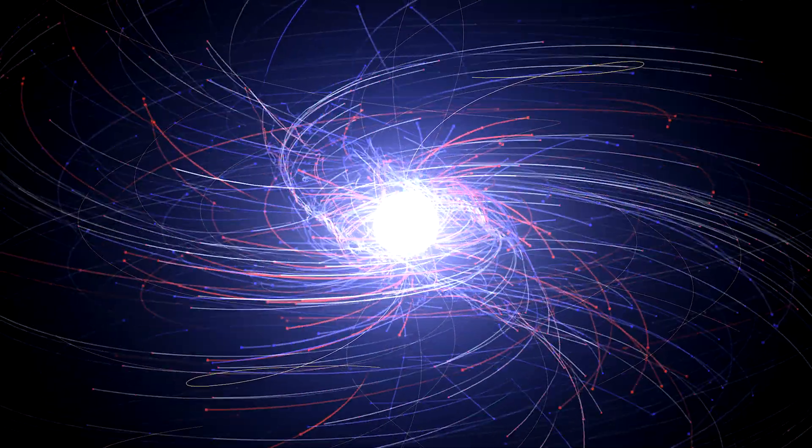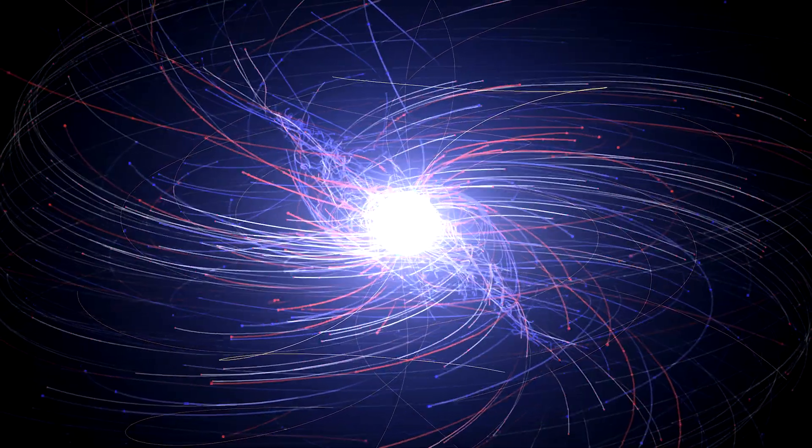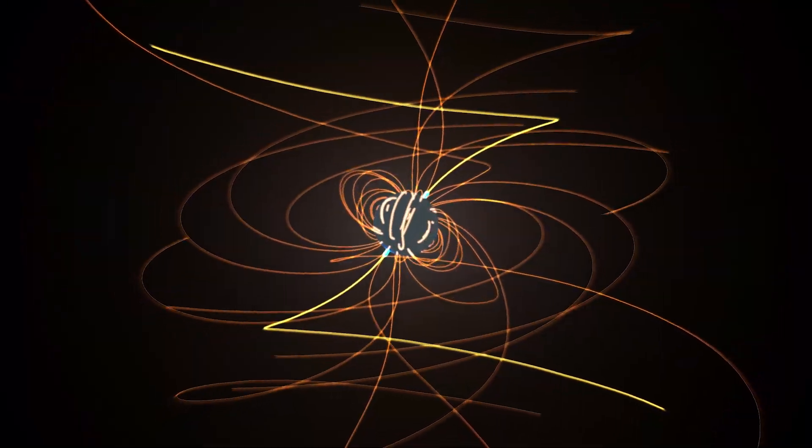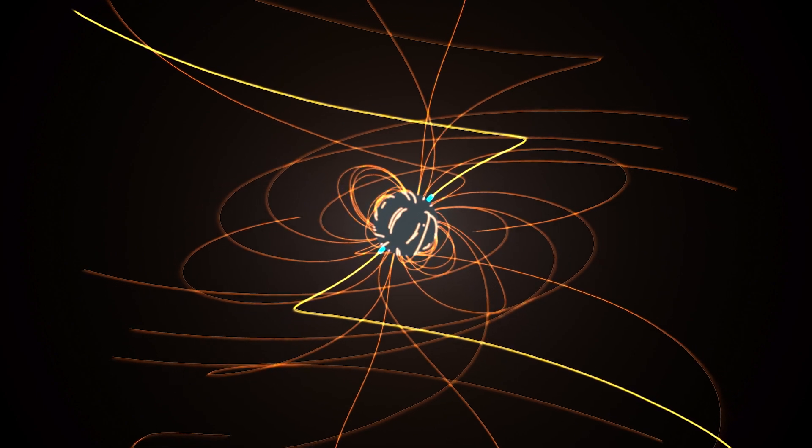Astronomers think all these signals originate from particle interactions in the pulsar's rapidly spinning magnetic field, but the details remain poorly known.